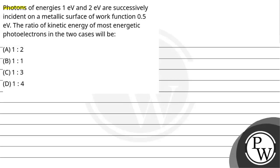Hello, Gatcho. Let us read this question. Photons of energy 1 eV and 2 eV are successively incident on a metallic surface of work function 0.5 eV.